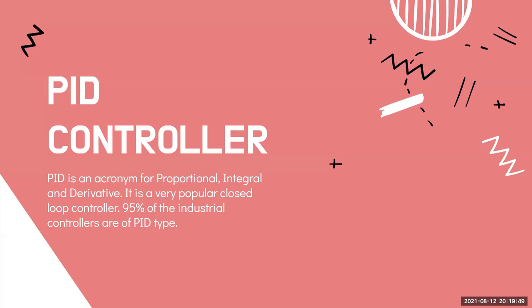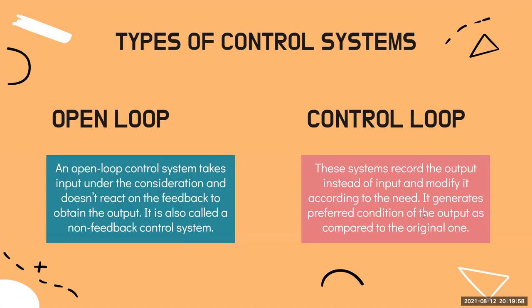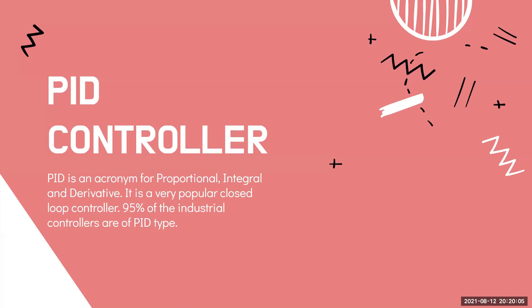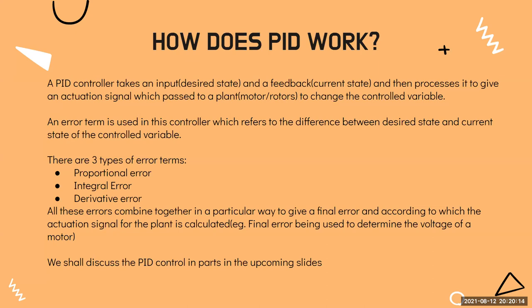PID is used everywhere, and as stated, we use closed loop systems in real life because there are a lot of variables. Now moving to PID control: PID has three components — proportional, integral, and derivative. Based on these three error terms, we will drive the bot. So what is an error? Error simply gives you the difference between the desired state and the current state, and that error acts as the input for the system.